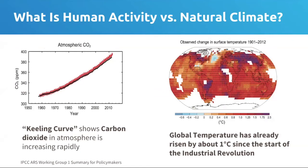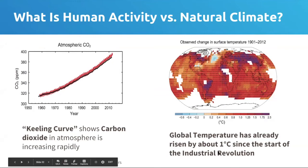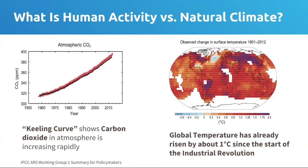Some other visuals that are really important to show include the Keeling curve, which shows the changes in atmospheric carbon dioxide that we've been measuring since the late 1950s — that's when we first developed the capability to directly measure how much CO2 was in the atmosphere. You can see that we were already well above the pre-industrial 280 parts per million by the time these measurements began, and we can see the steadily increasing value since then.